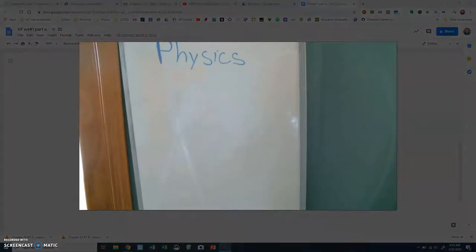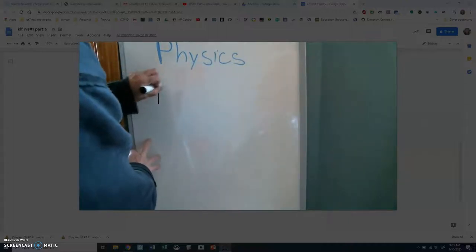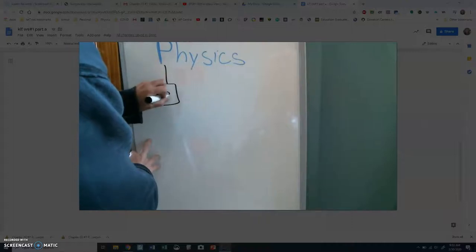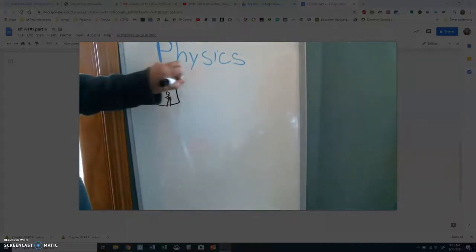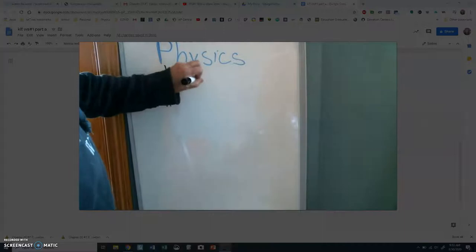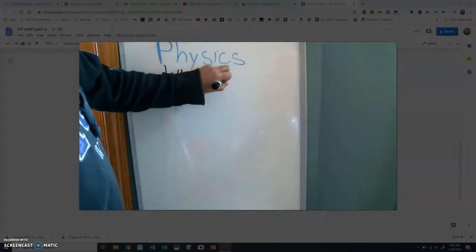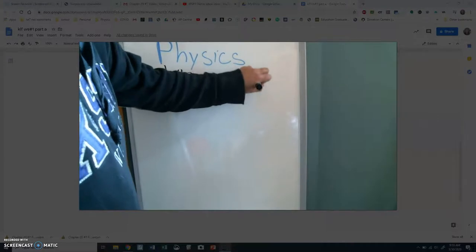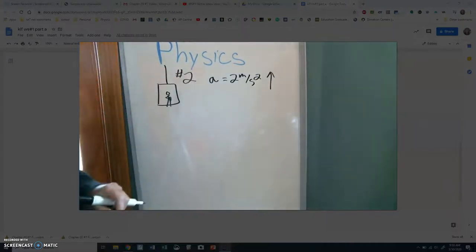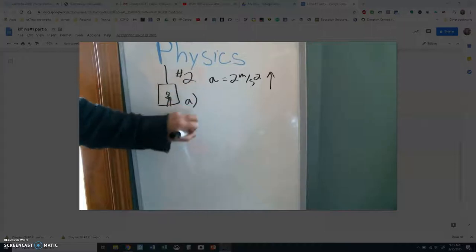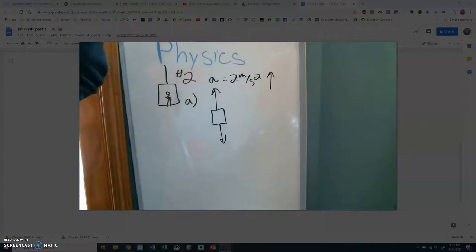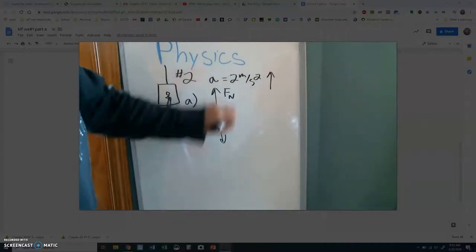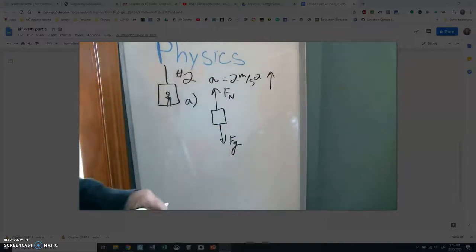So I'm going to go up to this, and I'm just going to draw the elevator again, the person, and we're still talking about the person. And now number two says it's accelerating at two meters per second squared upward. So let's get a force diagram. It's the same as before. We haven't added any forces. We still have force normal.